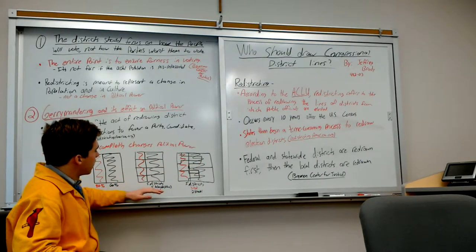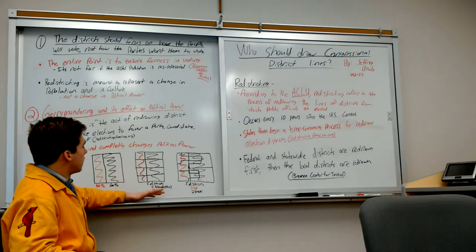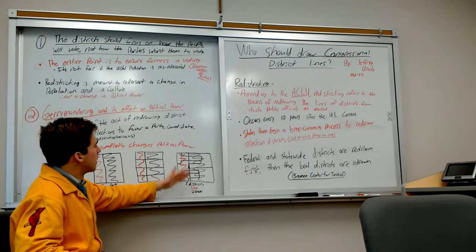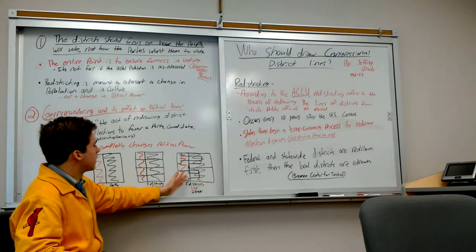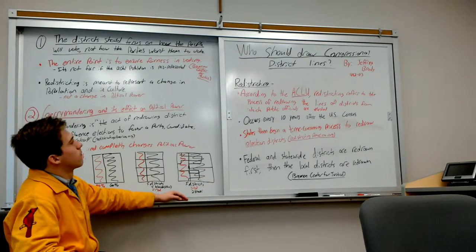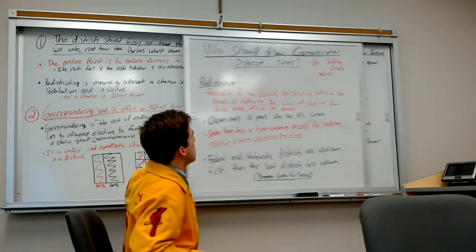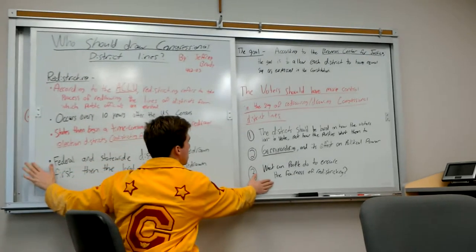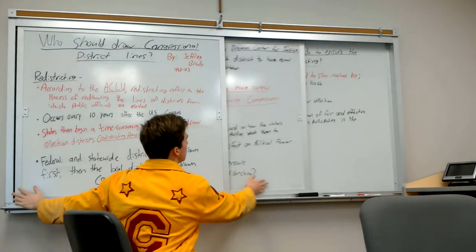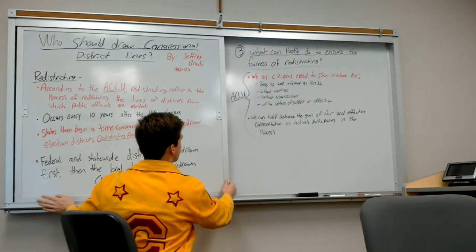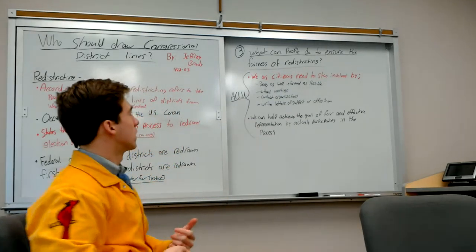So this would be a representation of what gerrymandering is and how it's unfair that these political people are drawing these lines just so that instead of having all the black be the majority, they change it so that they draw these crazy lines and now it's all red that have the majority.